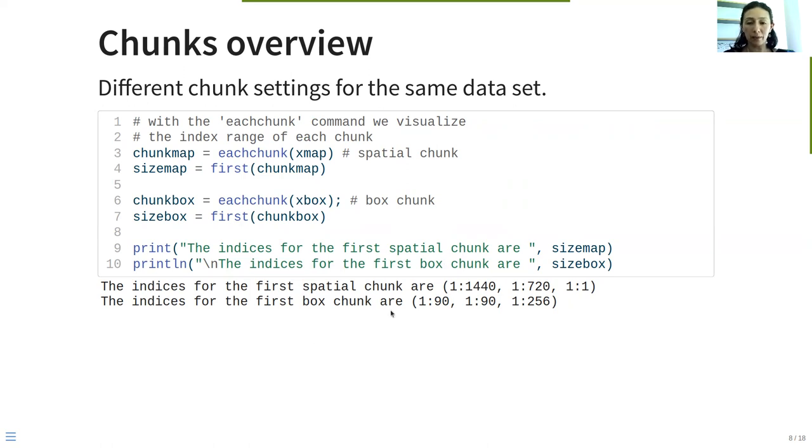Here we observe that for the first and second dimension of the spatial chunking, we are having the same values that the number of pixels of a gridded global grid at 0.25 degrees. This is 1440 pixels on the longitude and 720 on the latitude for time step. On the other hand, the indices for the first box chunk are 90 by 90 by 256. In other words, this is 90 pixels on the longitude, 90 pixels on the latitude, and 256 time steps.